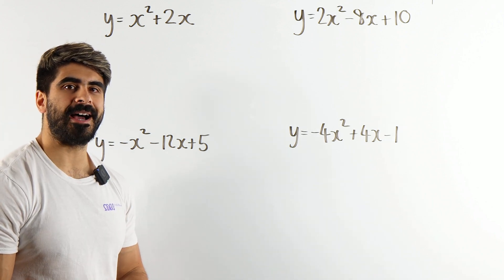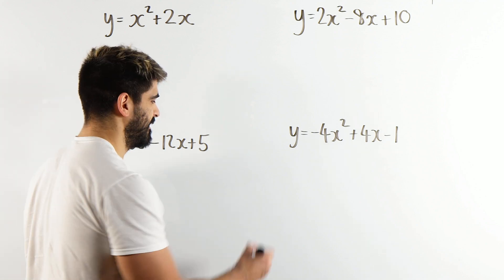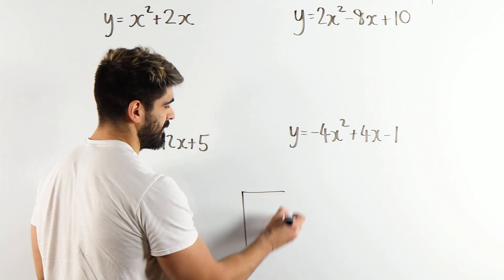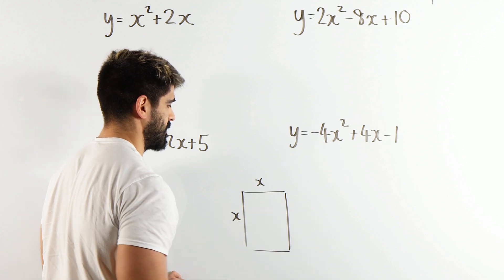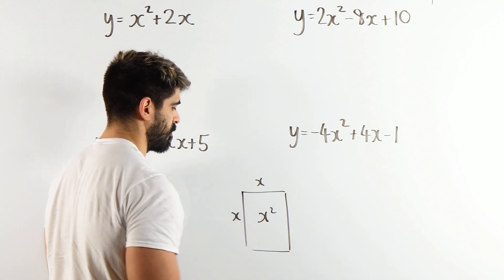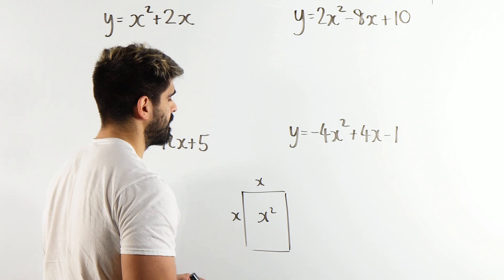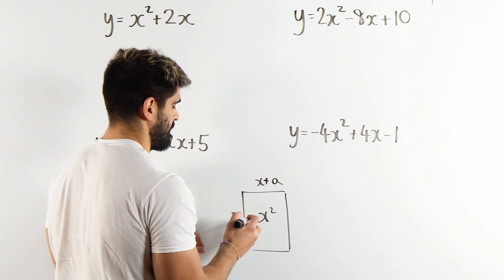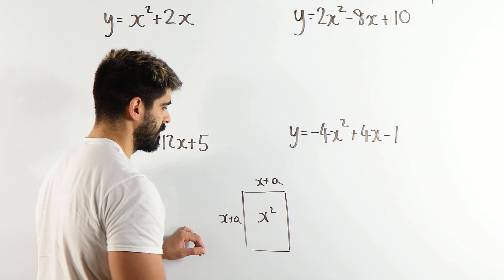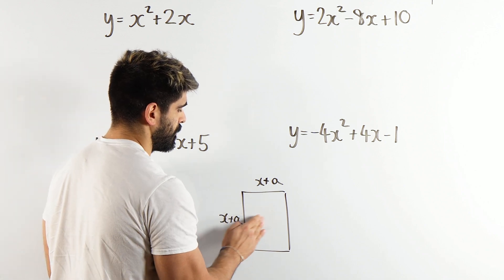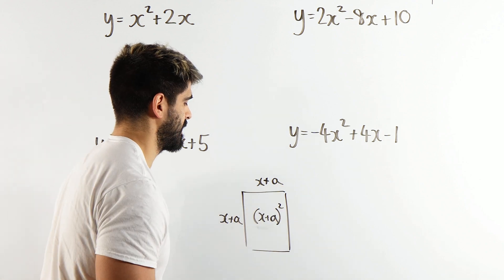What do we mean by a completed square? Well, let's think about what even is a square. A square looks like this — close enough — where we have equal sides, and the area is x squared. Now, we're going to look generally at a square where the side lengths are x plus a. And the area would be x plus a squared.